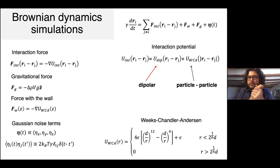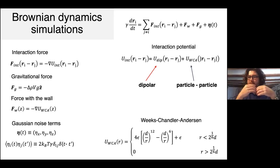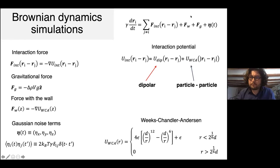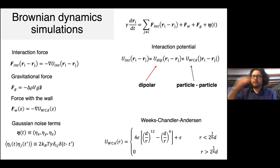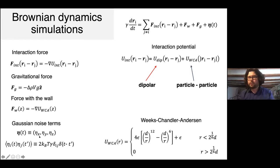Our simulations use a Brownian dynamics integrator with dipolar particle-particle interactions mixed with a WCA potential to model hard interactions between particles, and also WCA interactions with the walls. We also include gravity because we were thinking about the difference in population of particles up or down, plus Gaussian noise for temperature. This is pretty standard.